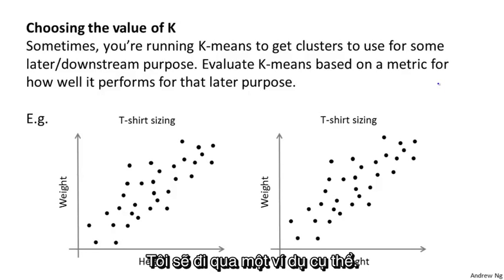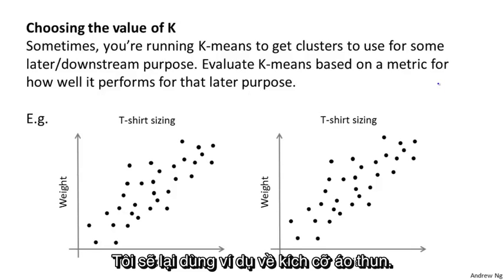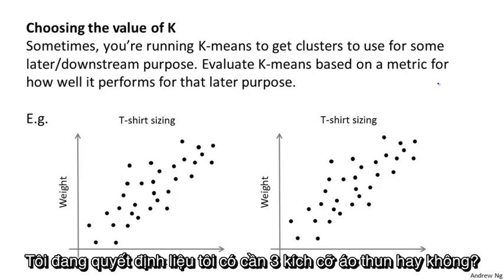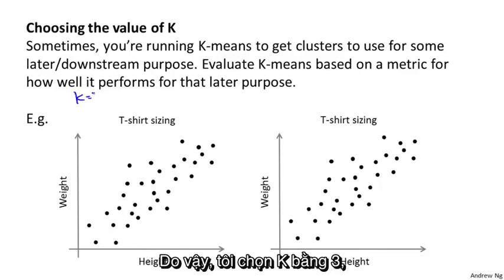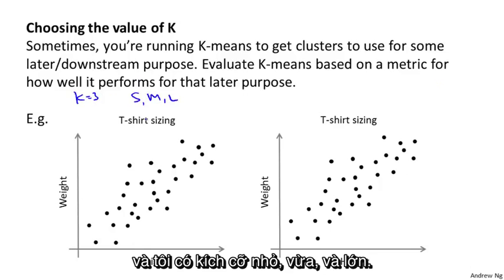Let me step through a specific example. Let's say we go through the t-shirt sizing example again, and I'm trying to decide, do I want three t-shirt sizes? So if I choose k equals three, then I might have small, medium, and large t-shirts.